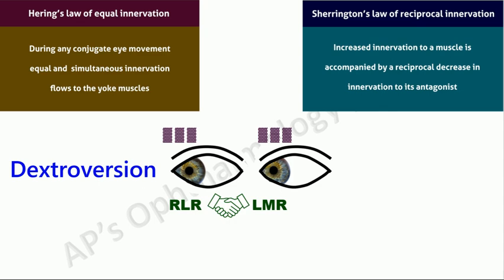By Sherrington's law, there is a reciprocal inhibition of the right medial rectus, which is the antagonist of the right lateral rectus, and the left lateral rectus, which is the antagonist of the left medial rectus. This allows smooth movements.